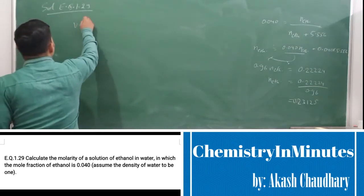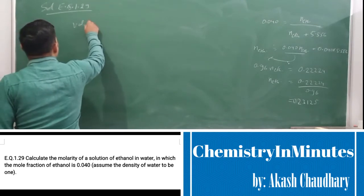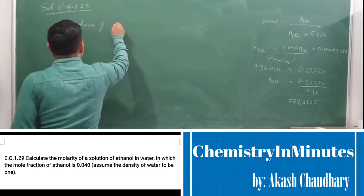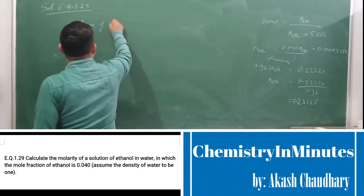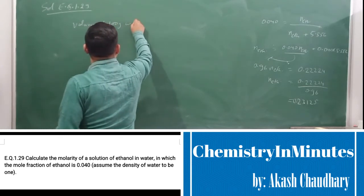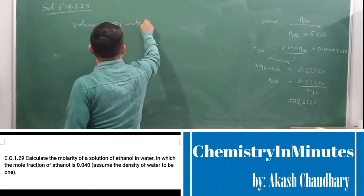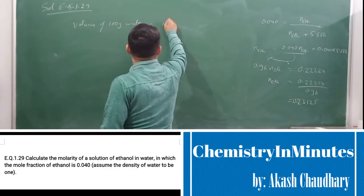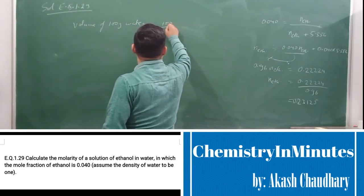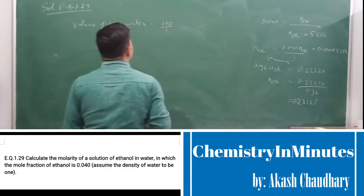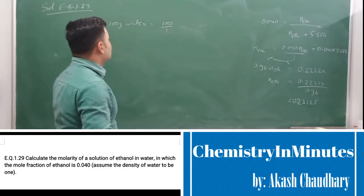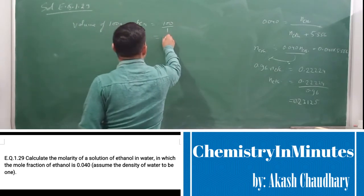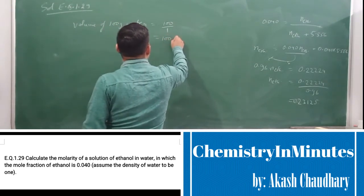The volume of 100 grams of water equals mass divided by density, that is 100 divided by 1, which gives 100 mL.